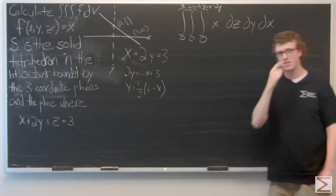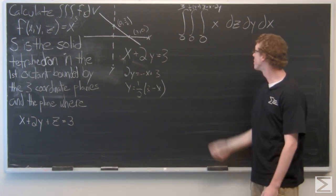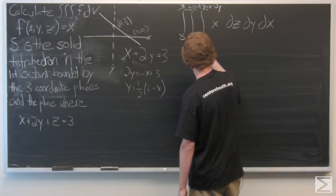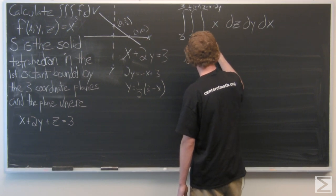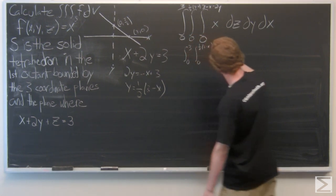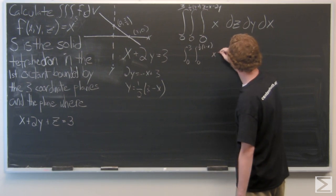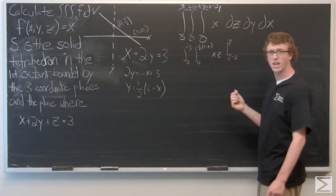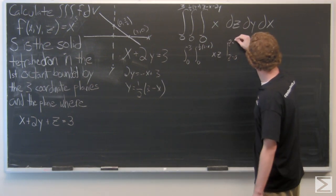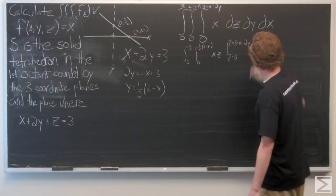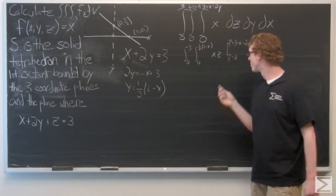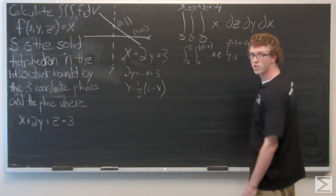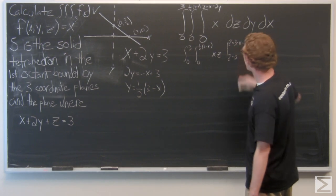Integrating with respect to z is fairly simple — we just add the z in. We multiply x by z and evaluate from z equals zero to z equals three minus x minus 2y. Plugging in z equals zero is simple since there's just one term with a z, so that drops out and we're only left with whatever is multiplied by our top bound.